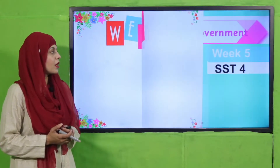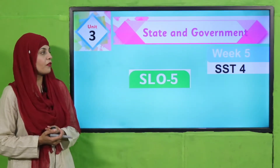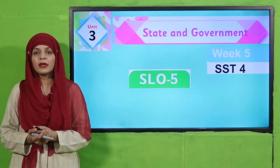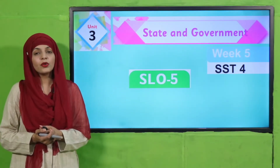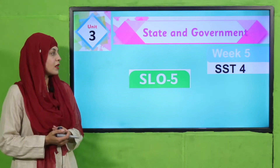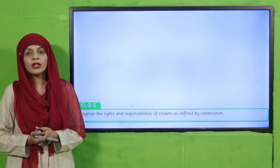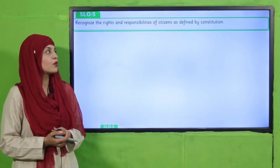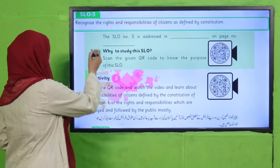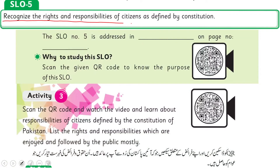My dear students, as you know, we are on Unit Number 3 of your Social Studies Remedy Pack. Today we are going to discuss SLO Number 5. According to SLO Number 5, students will be able to recognize the rights and responsibilities of citizens as defined by the constitution.